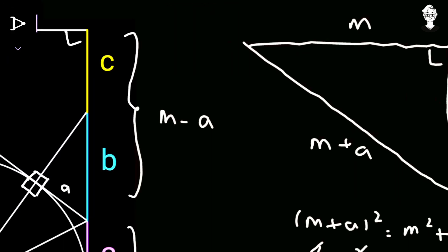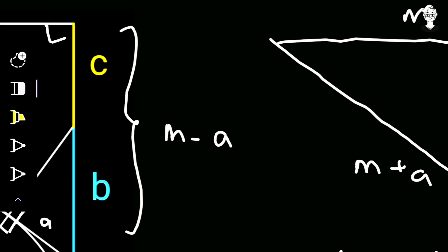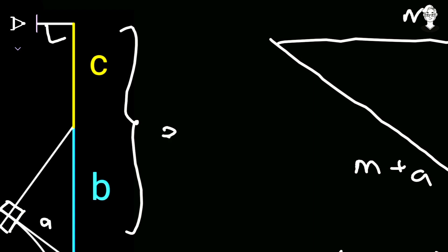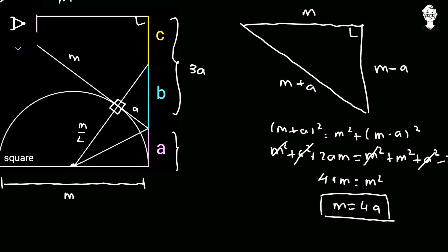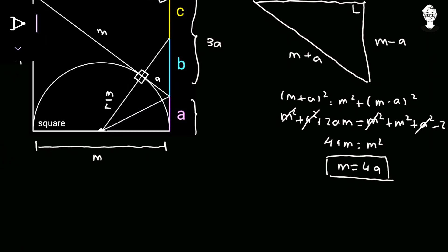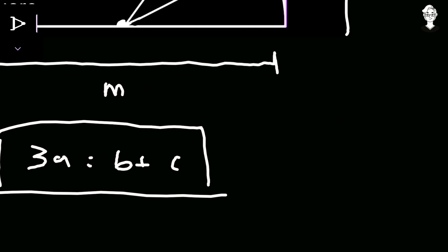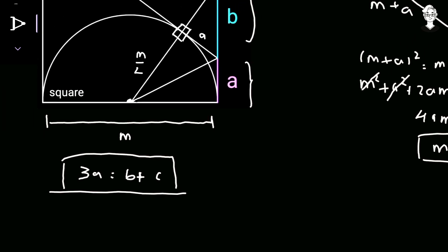Substituting M = 4A, the length M minus A becomes 4A minus A, which equals 3A. This length 3A represents C plus B, so we have our second equation: 3A = B + C.